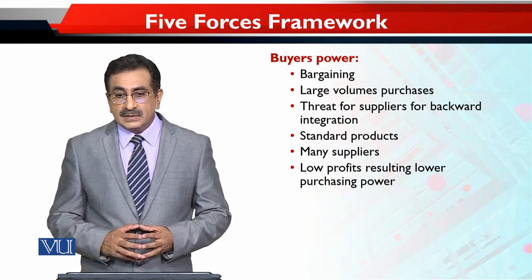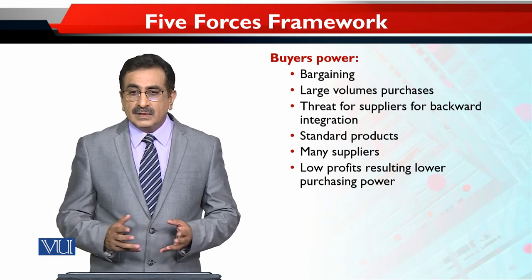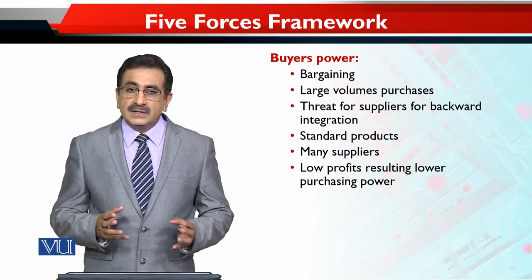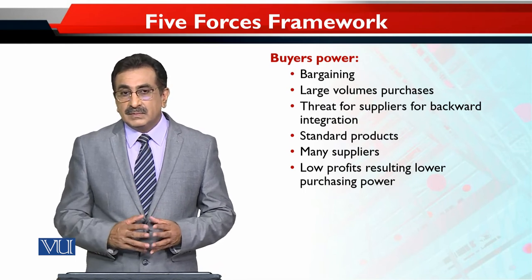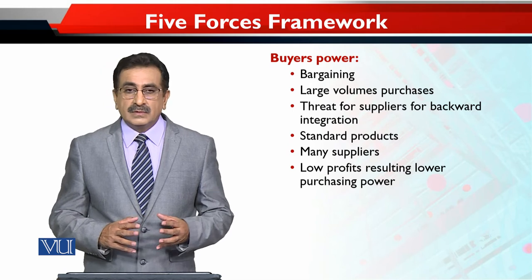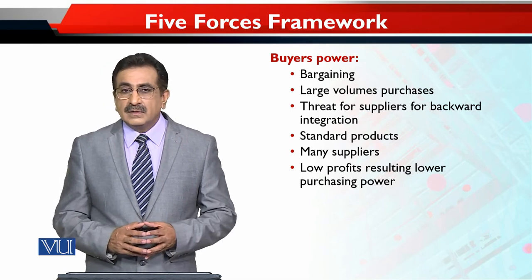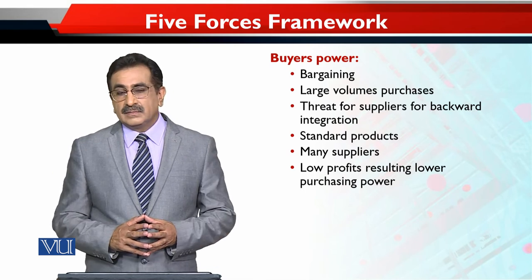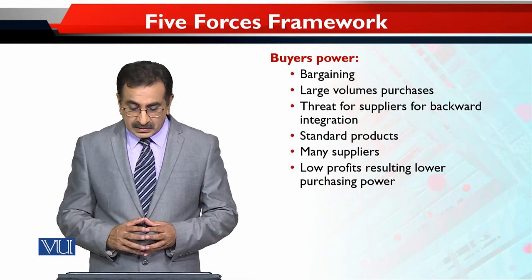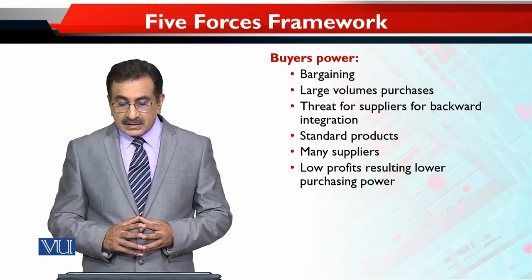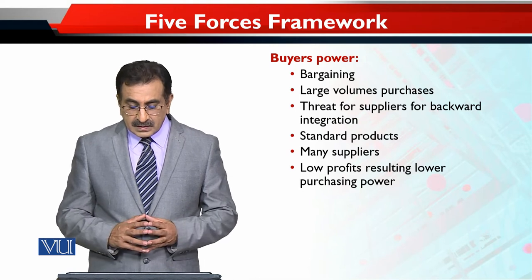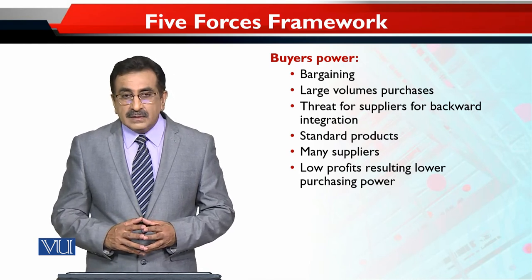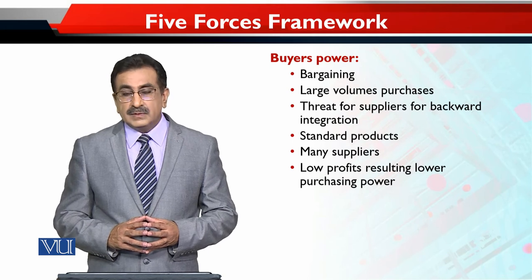If a buyer is a large volume purchaser — like big retailers such as Carrefour, Metro, or Alfatah — they are big buyers and can exert pressure on the manufacturer of fast moving consumer goods, setting their own price terms and delaying payment by 15 days or a month. The threat for suppliers includes backward integration, standard products with nothing special, many alternative suppliers, and low profits resulting in lower purchasing power.